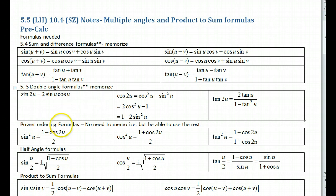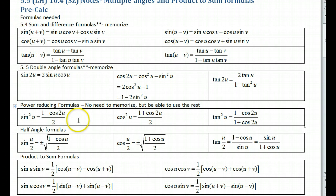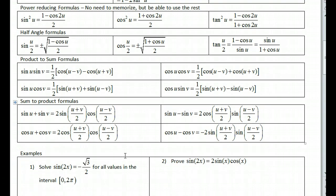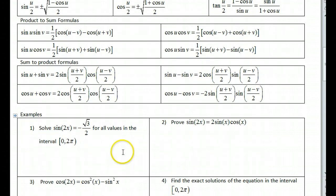And then power reducing formulas — just look at them and see. Half angle formulas might be a little bit more prevalent, so you might see those. And then product-to-sum and sum-to-product formulas — we'll look at those briefly in class, but they're there for you. So let's try some of these and see if we use the double angle formulas.